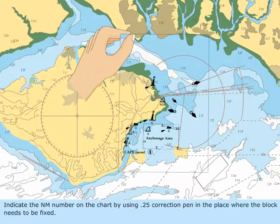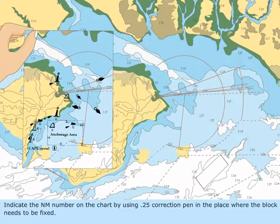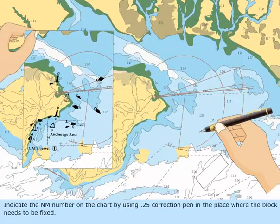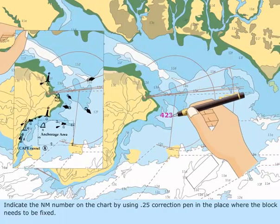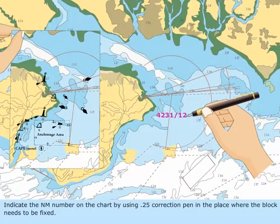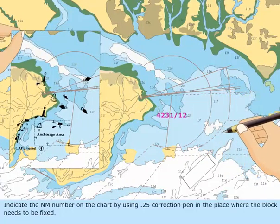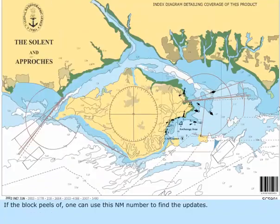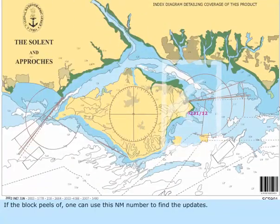Indicate the NM number on the chart by using .25 Correction Pen in the place where the block needs to be fixed. If the block peels off, one can use this NM number to find the updates.